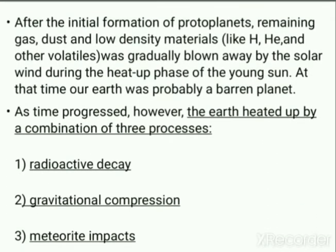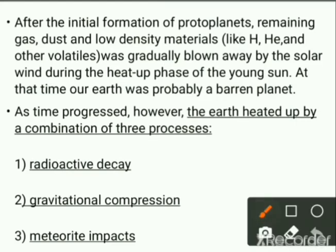After the initial formation of the protoplanets, remaining gases, dust, and low-density materials like hydrogen, helium, and other volatiles were gradually blown away by the solar wind during the heated-up phase of the young sun. At that time, our Earth was probably a barren planet.